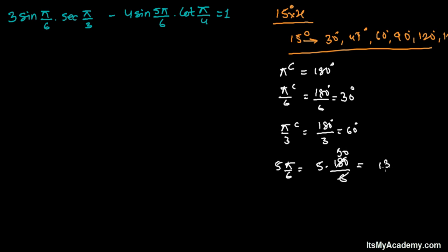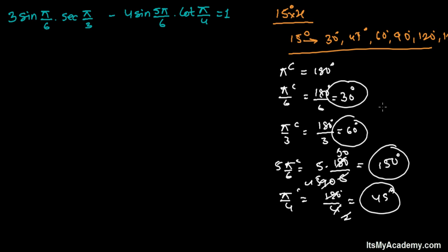Another one is pi over 4. Pi over 4 - pi is 180 degrees divided by 4, so 4 is 2 times 2, 2 times 90, and 2 times 45, that's 45 degrees.